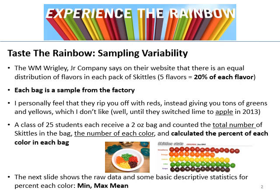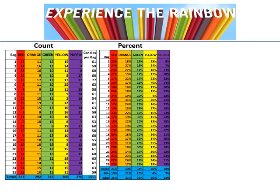The reason you have to count the total number as well as the total number of each color is you don't get the same number in each bag. The counts are on the left, the percentages in the middle. Some bag totals ranged from 60 to 77 to 50 — that's why you have to use percents. Looking at the red percent column, the minimum was 10%, the maximum was 35%, and the average overall was about 21%. Orange was 19%, greens 21%, yellows 20%, purple 18%.